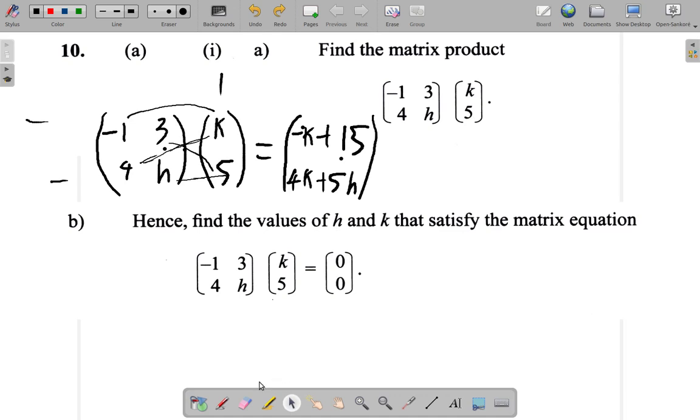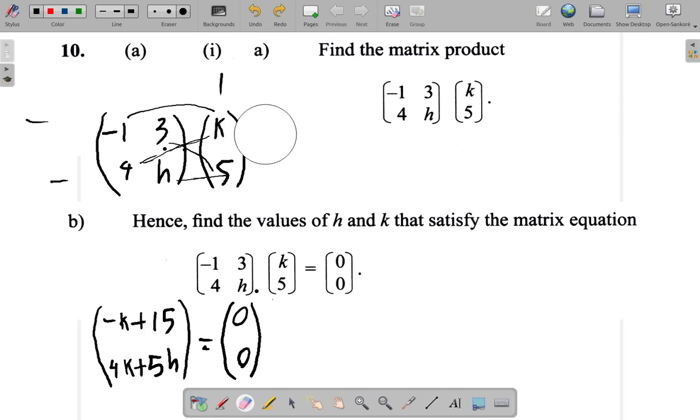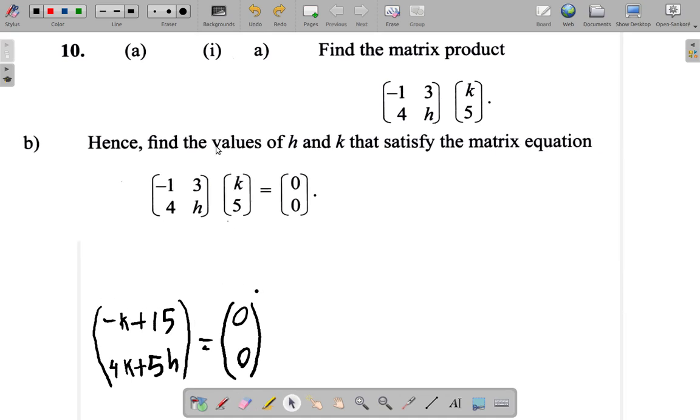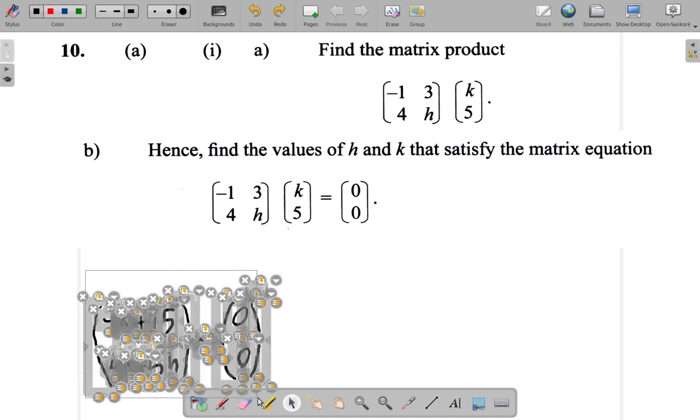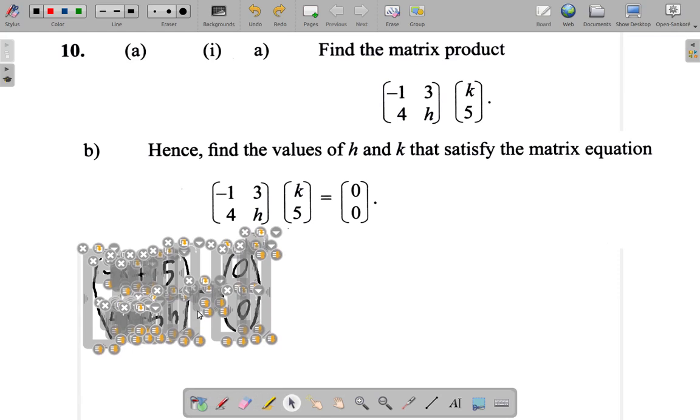So, what we have here, what it turned out to be is negative K plus 15, 4K plus 5H is equal to 0, 0. So, we're going to work with that. You can just erase what we have up here to make space and move this up a bit. We're working with this.